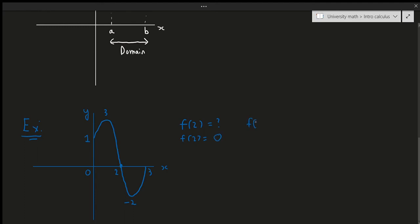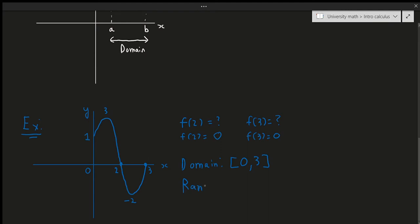What is f(3) equal to then? Well, f(3) is again equal to 0, because the value at x=3 is indeed 0. So f(3) equals 0. What's the domain? The domain, as mentioned, is the set of all possible x values. So the domain here would be from 0 to 3 — we include both values since there's no restriction. The range would be from the lowest value, which is -2, all the way to 3. So the range is [-2, 3].